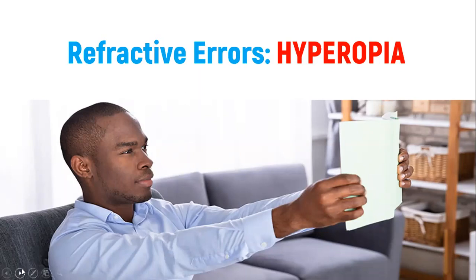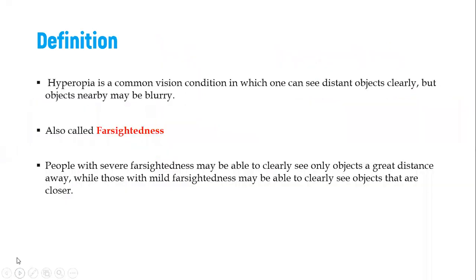We're going to look at another refractive error, which is hyperopia, also called farsightedness.